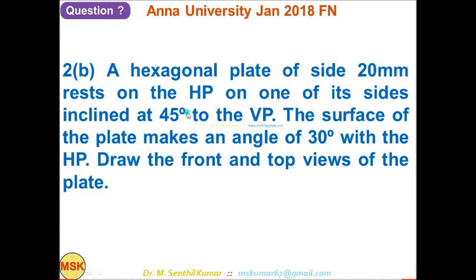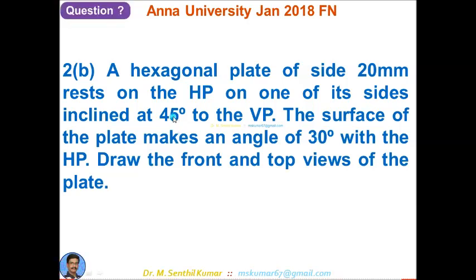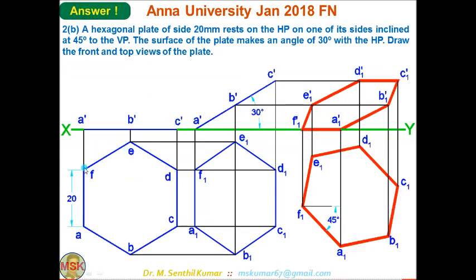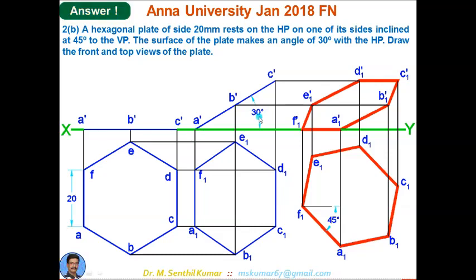I'll take 30 degrees with HP first, then 45 degrees with VP next. In the first step, draw the initial top view with the hexagon such that two sides AF and DC are perpendicular to XY. Draw the corresponding front view A-dash B-dash C-dash. Then tilt the front view at 30 degrees with respect to HP. The edge A-dash F-dash is on XY, meaning that side is in the HP.